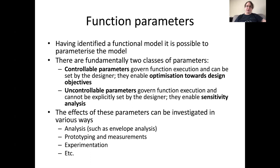Having identified a functional model, it is possible to parameterize the model. There are fundamentally two classes of parameters: controllable parameters and uncontrollable parameters. Controllable parameters are parameters the designer can control explicitly; they allow optimization towards design objectives. Uncontrollable parameters govern function execution but cannot be explicitly set by the designer; they allow sensitivity analysis of the design.